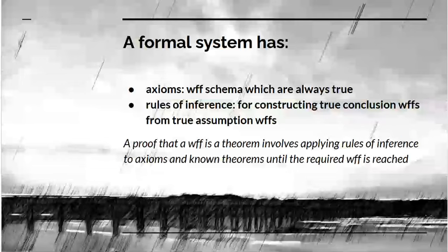A formal system has axioms which are well-formed formula schema, which are always true. It also has rules of inference, ways of constructing true conclusion well-formed formulae from true assumption well-formed formulae. A proof is another well-formed formula. A proof that a WFF is a theorem involves applying rules of inference one after the other, starting from axioms and known theorems, until you get the well-formed formula you want to prove. If you have done that, then that is a theorem of the formal system.